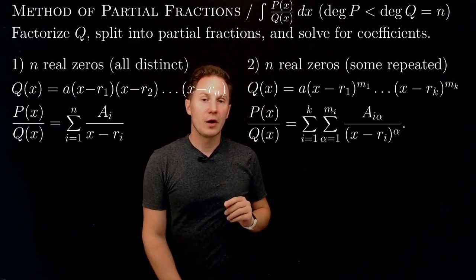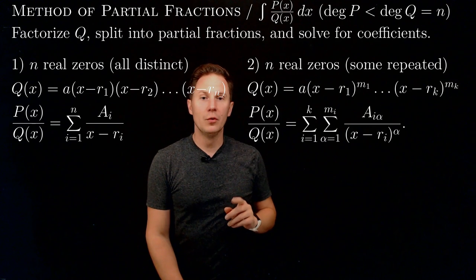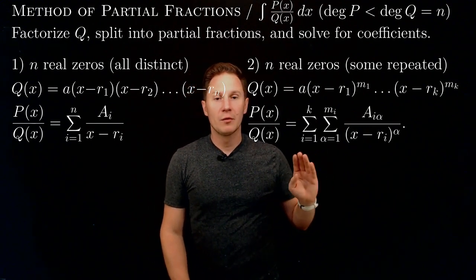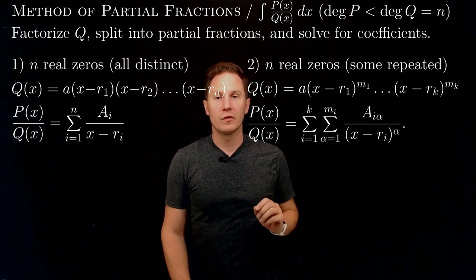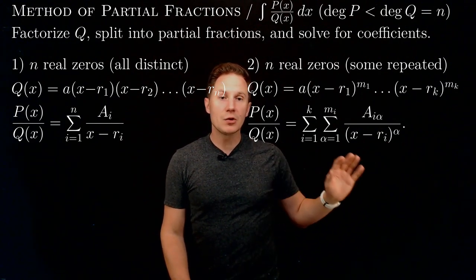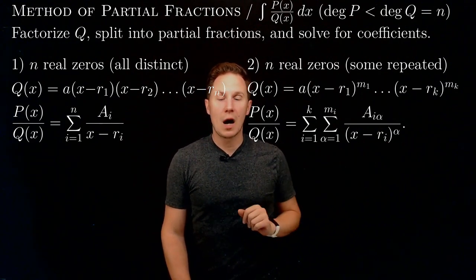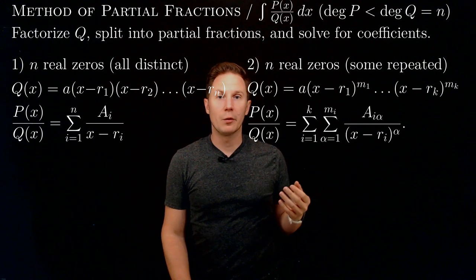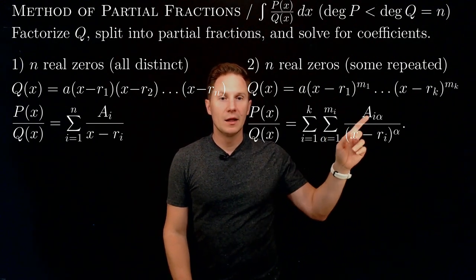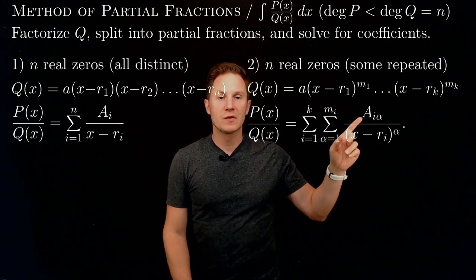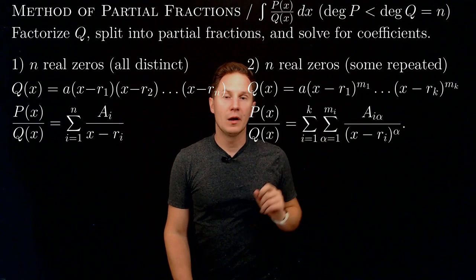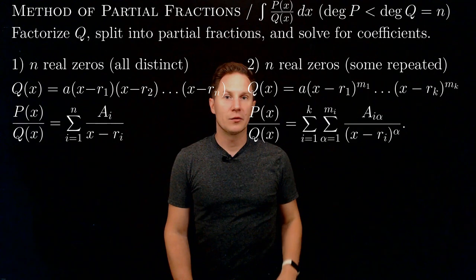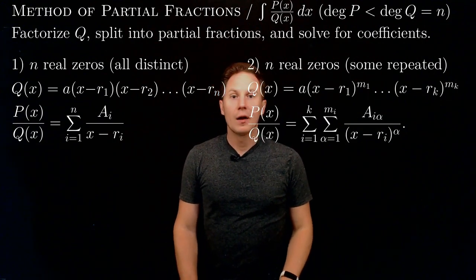With this factorized form of q, p over q can be written as the sum of these partial fractions, each of which we know how to integrate using the natural logarithm or simply the power rule. The coefficients a sub i alpha are the ones we need to determine before integrating term by term.